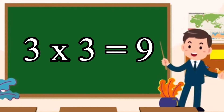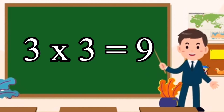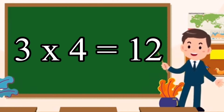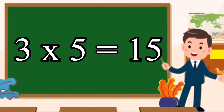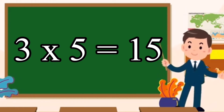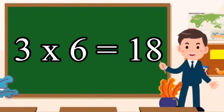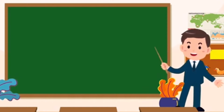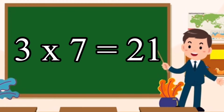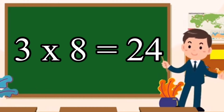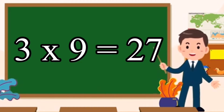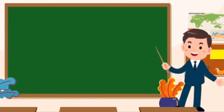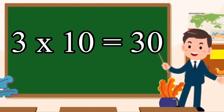3 threes are 9. 3 fours are 12. 3 fives are 15. 3 sixes are 18. 3 sevens are 21. 3 eights are 24. 3 nines are 27. 3 tens are 30.